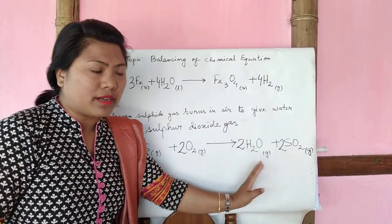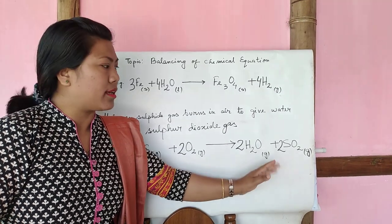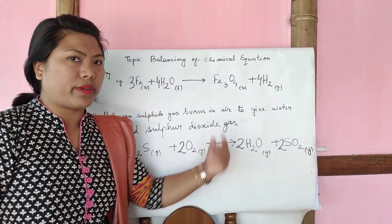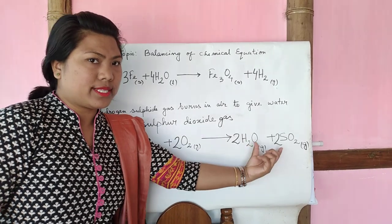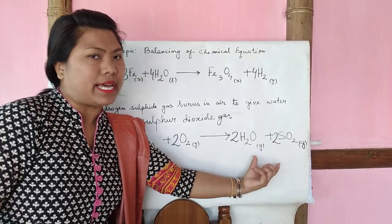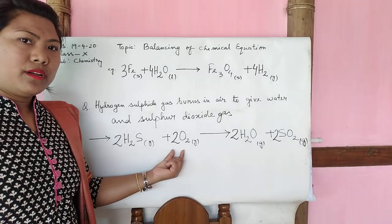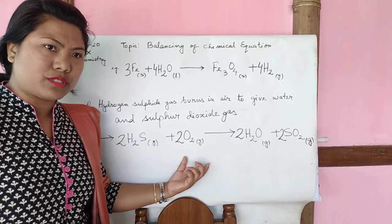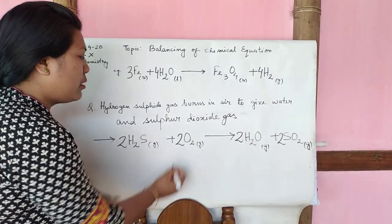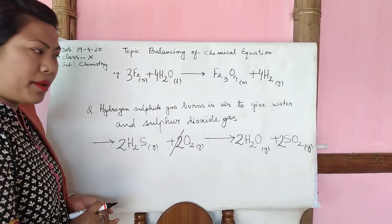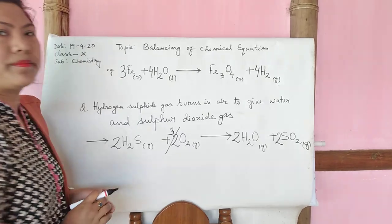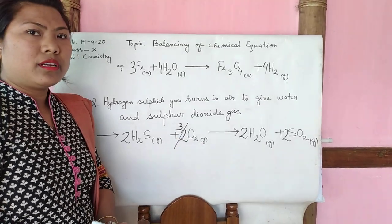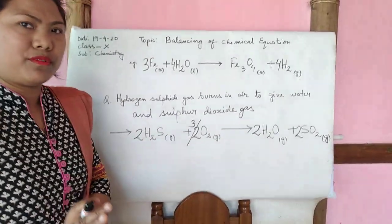After putting 2 for sulfur, your oxygen number changes: two times two gives four, and adding the other two gives six total oxygen atoms on the product side. On the reactant side you have four — to change four to six, no need to add another coefficient. Instead, cut the 2 and replace it with 3. Three times two gives six, so the equation is balanced.